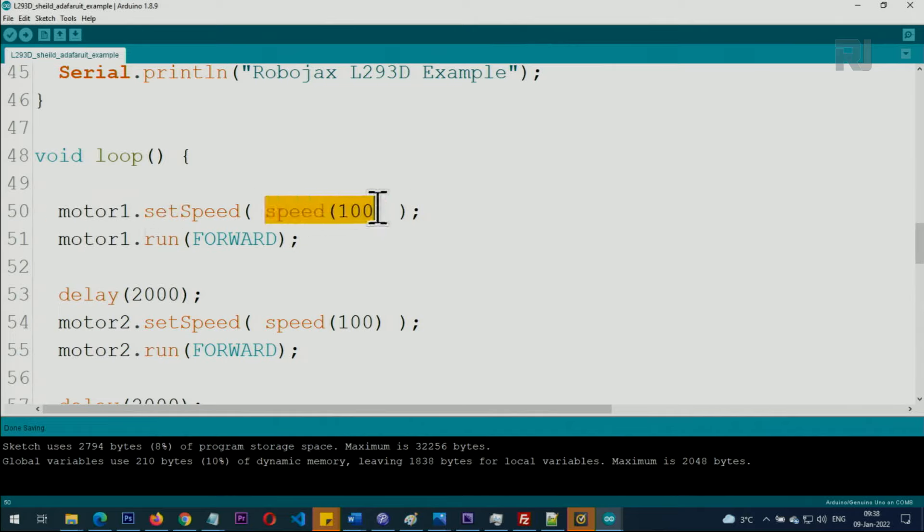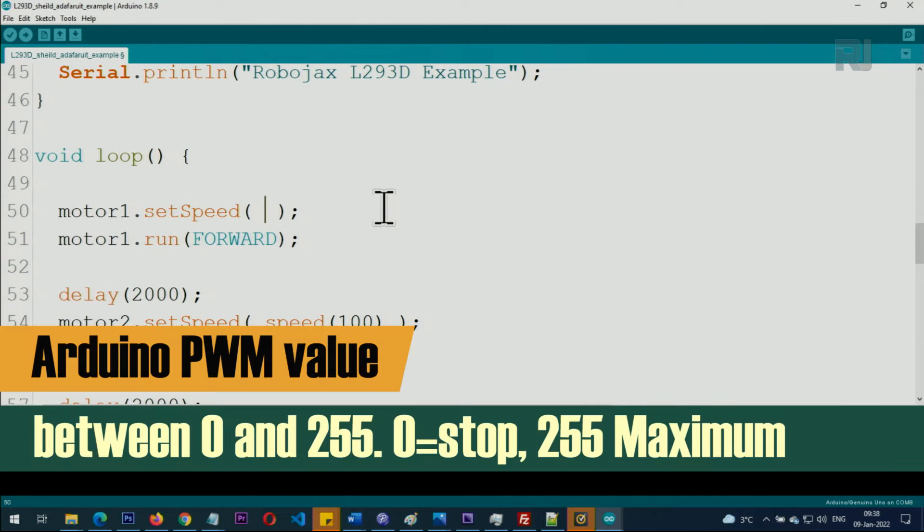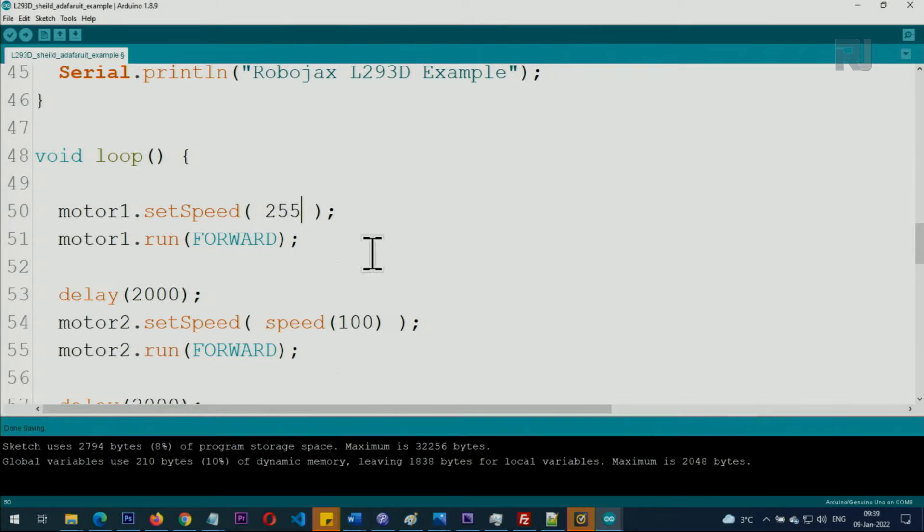And very simple. First we set the speed of motor. It says set speed and here we will enter some value between zero to 255. So that is different speed. From zero means stop, 255 means maximum speed.